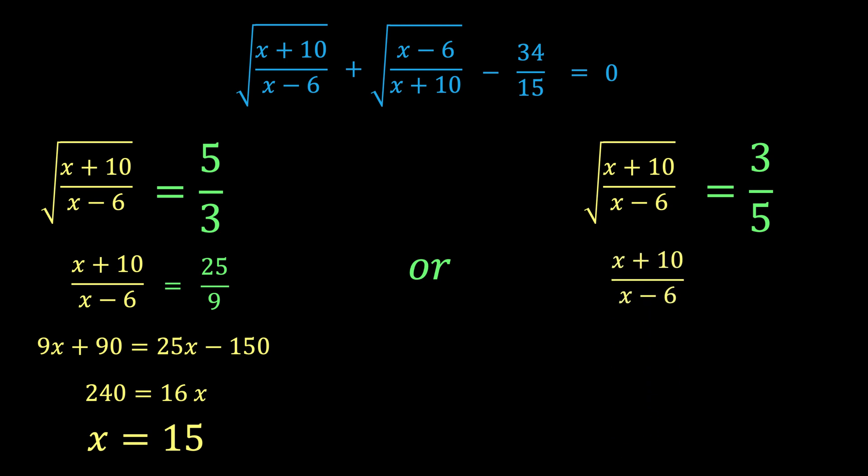For the second equation, we do the same thing. We square both sides of the equation to arrive at x plus 10 over x minus 6 equals 9 over 25. And cross multiplying, we have this equation. And gathering similar terms, we have 16x equals negative 304. And solving for x, we have x equals negative 19.